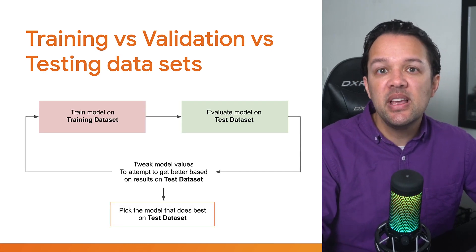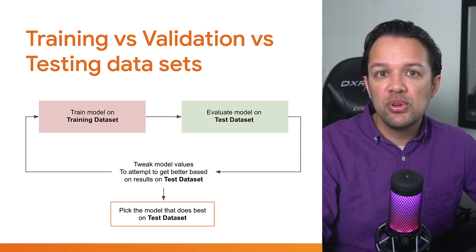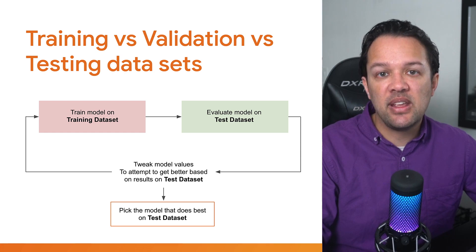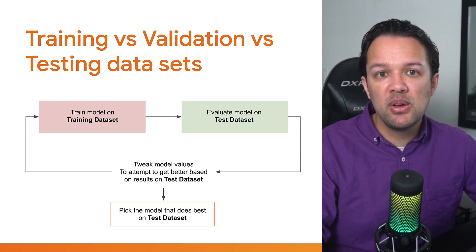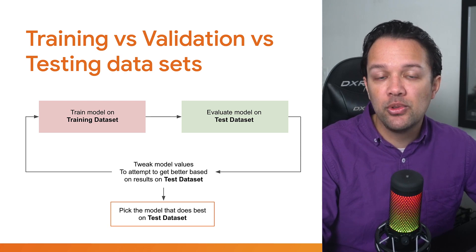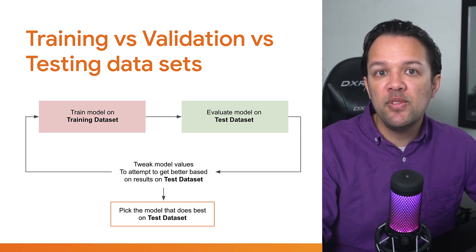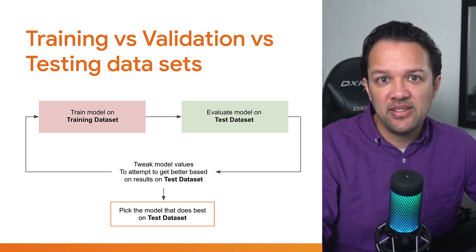The flow of training a model would look like this. First, you train the model on the training set. You then evaluate the model on the test set. And finally, you keep tweaking the model's parameters based on how it performed on the test set. You'll do this a number of times, and then finally pick the model that works best on the test data.